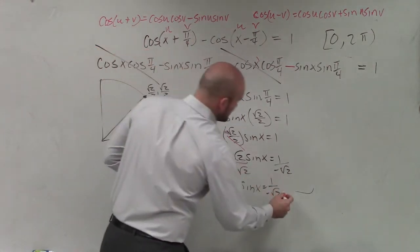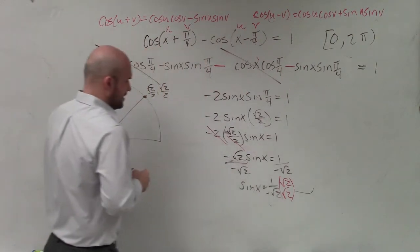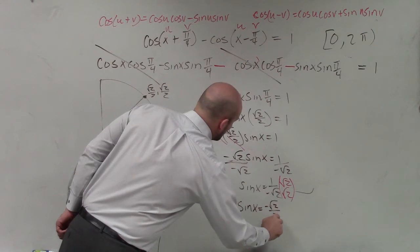Again, I'll show you the work, rationalize the denominator. Therefore, my final answer for my function is sine of x equals negative square root of 2 over 2.